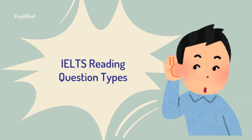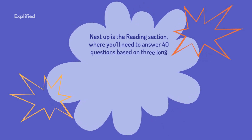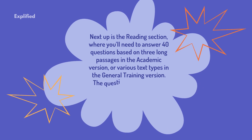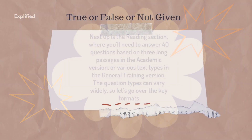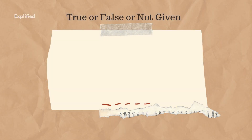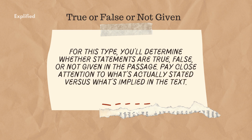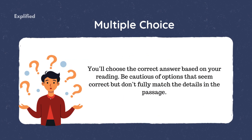Next up is the reading section, where you'll need to answer 40 questions based on three long passages in the academic version, or various text types in the general training version. True, False, or Not Given: you'll determine whether statements are true, false, or not given in the passage — pay close attention to what's actually stated versus what's implied in the text. Multiple Choice: you'll choose the correct answer based on your reading, and be cautious of options that seem correct but don't fully match the details in the passage.